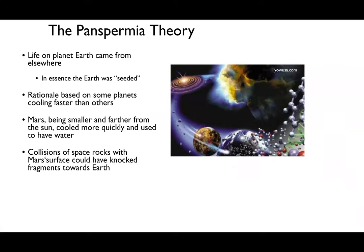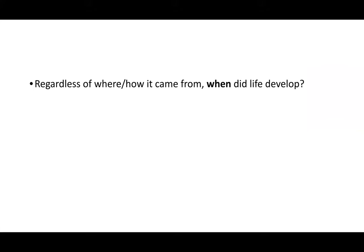The panspermia theory proposes that life on Earth came from somewhere else—that Earth was seeded with life from another planet such as Mars, or from outside the solar system. The rationale is that other planets, particularly Mars, likely cooled faster and used to have liquid water. If life evolved on Mars first, and a piece of Mars broke off due to an asteroid impact, that life might have been carried on a space rock to Earth. Ultimately, we don't quite know how life arose on Earth, and all we really have is anecdotal evidence.